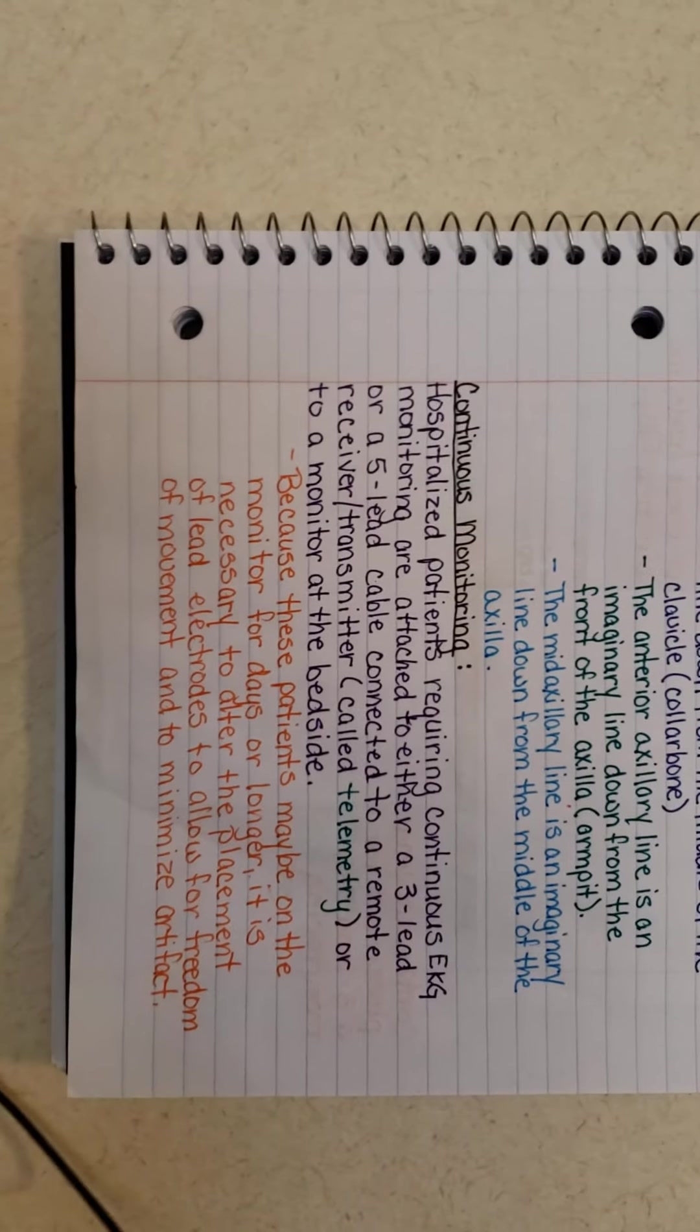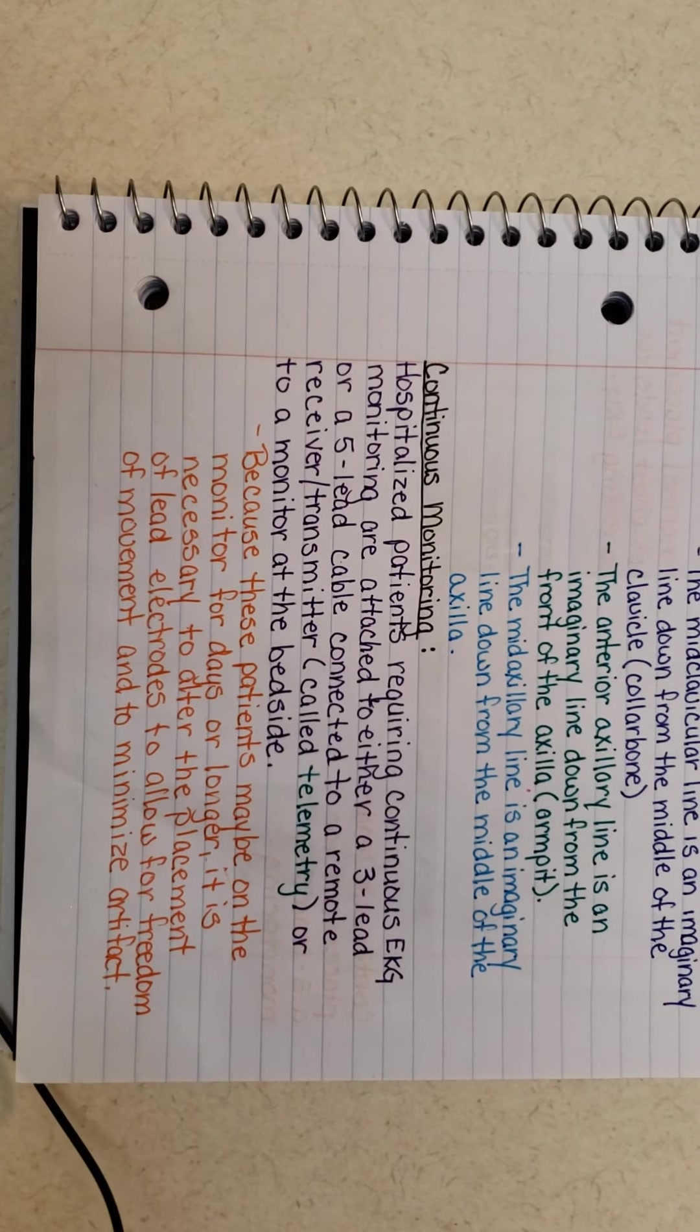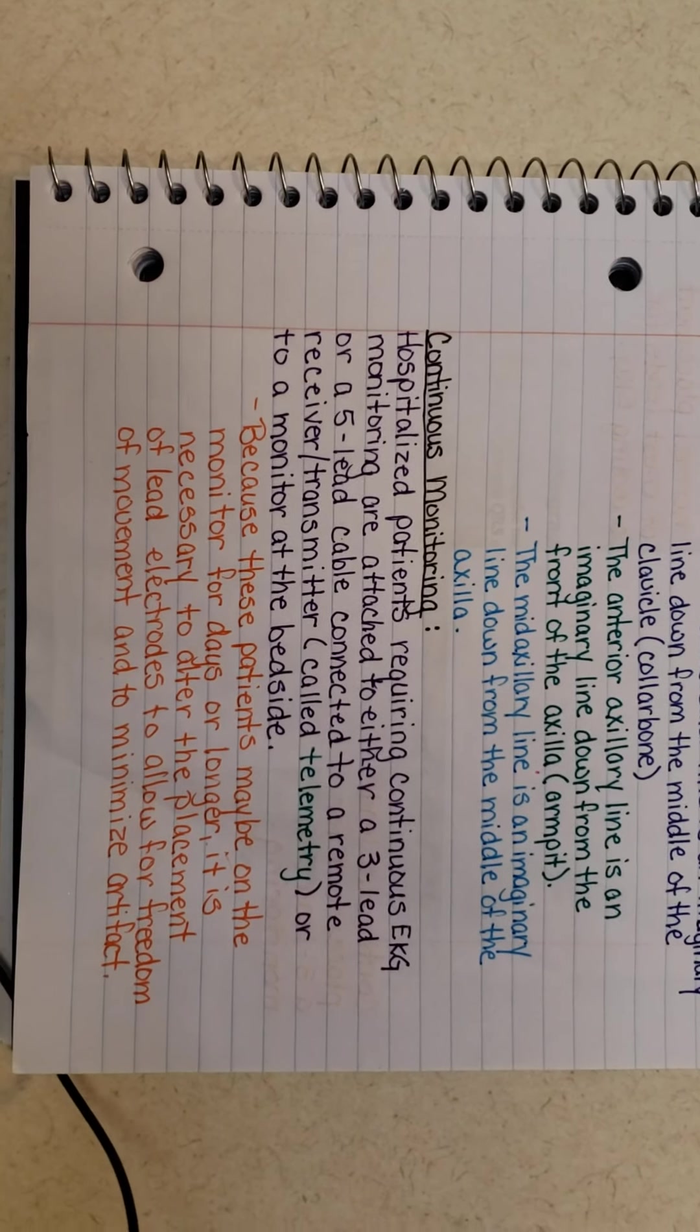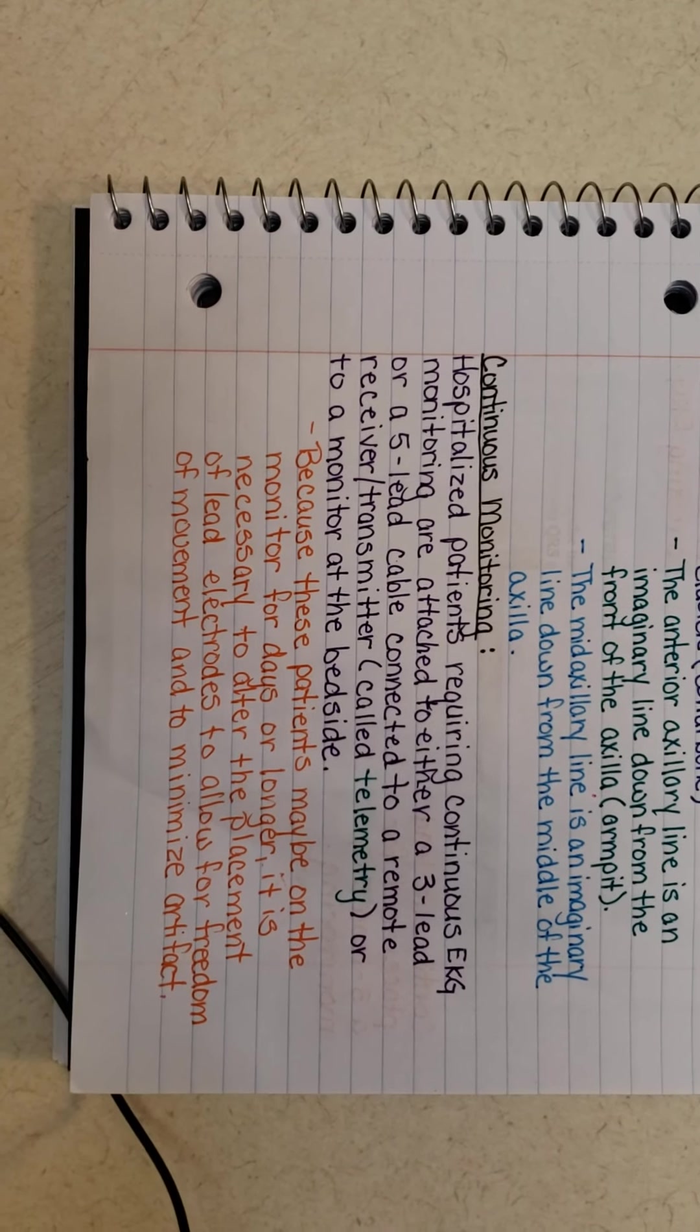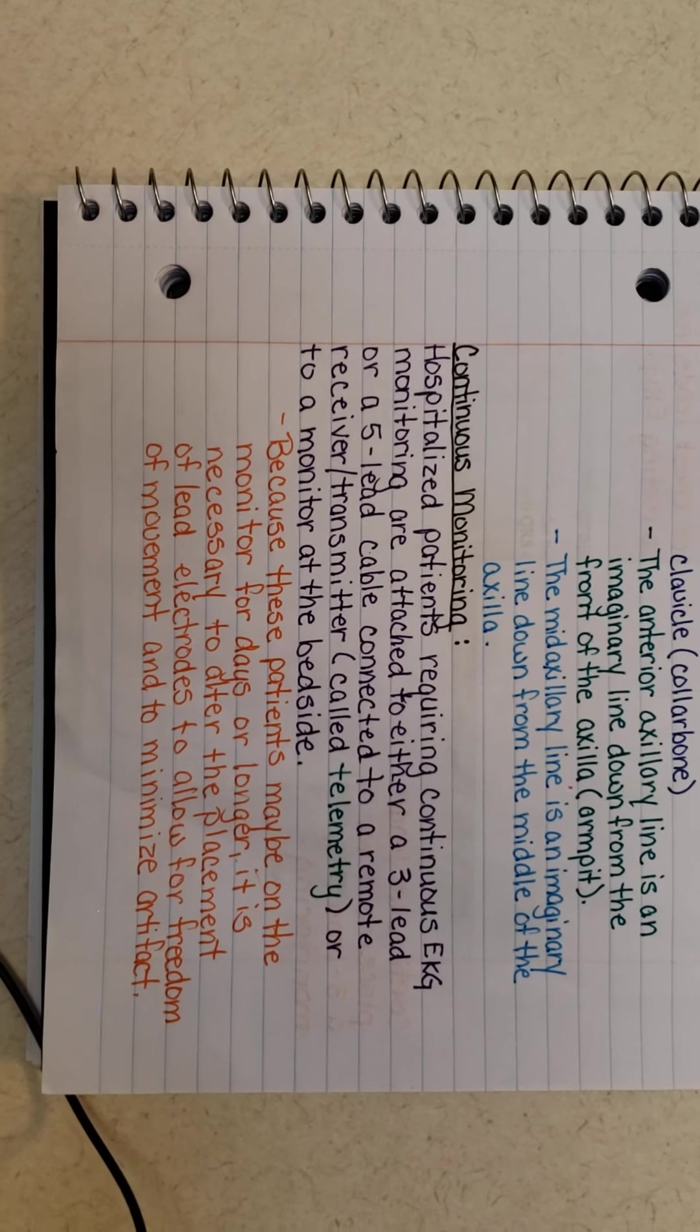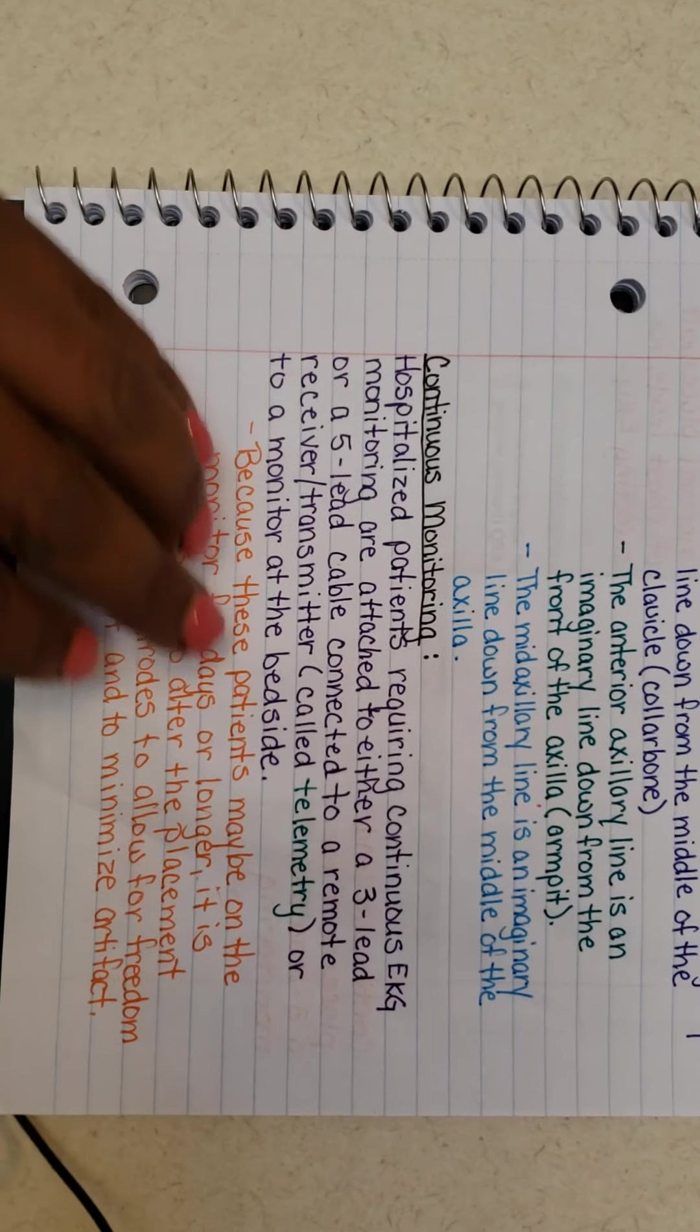Continuous monitoring is used when a patient is hospitalized after they had some kind of heart problems, be it if it's an MI, a mild stroke, heart palpitations, tachycardias, anything cardiac. They'll do continuous monitoring just to make sure that the patient hasn't suffered from an MI. These are patients who are hospitalized who require continuous EKG monitoring. They're attached to either a three lead or a five lead cable instead of the 10, which allows them to have more movability and also stops it from causing any undue artifacts.